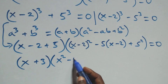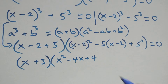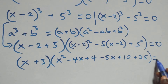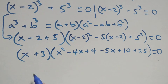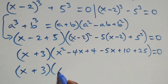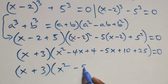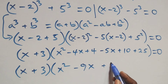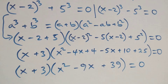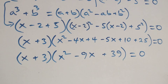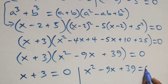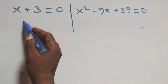This simplifies to (x plus 3) times open bracket x squared minus 4x minus 5 times (x minus 2) plus 25 plus 4, which gives x squared minus 9x plus 39, close bracket, equals to zero. So we have two possible cases: x plus 3 equals to zero, or x squared minus 9x plus 39 equals to zero.